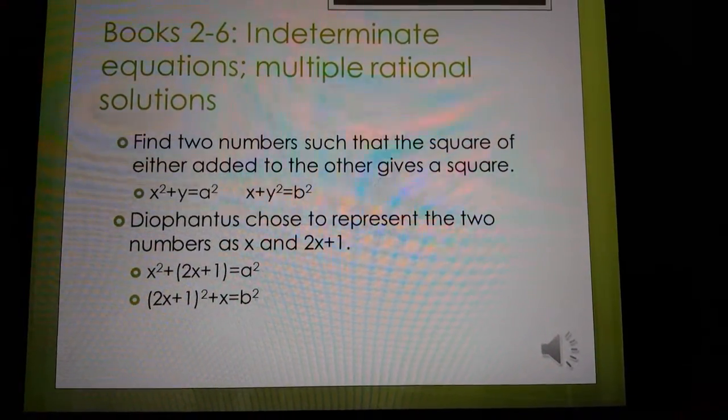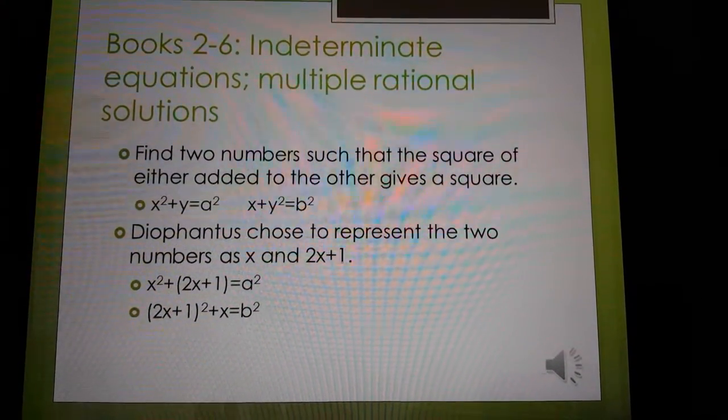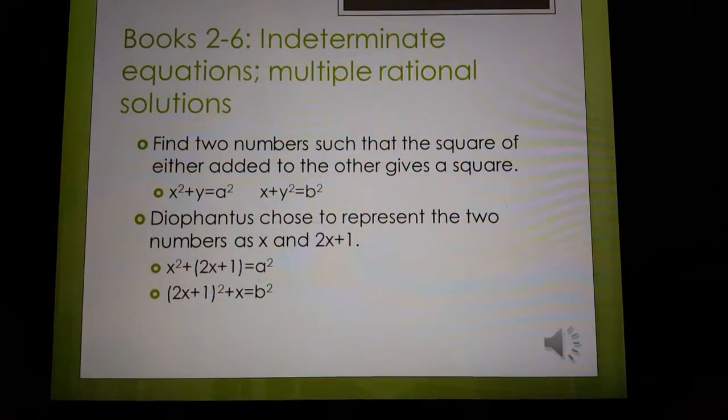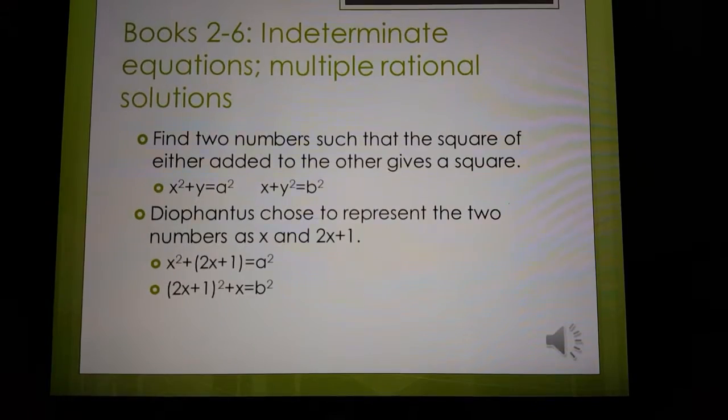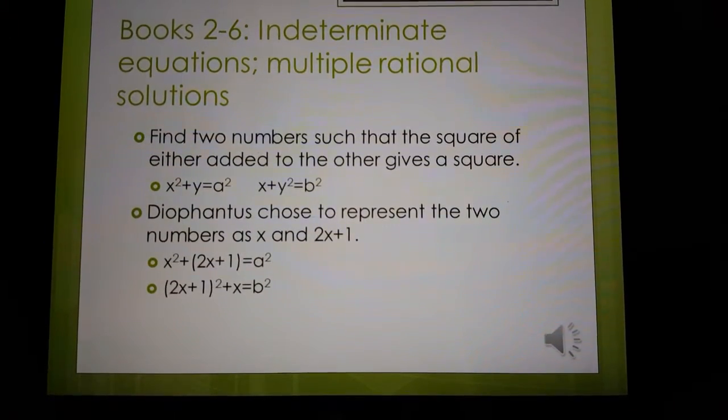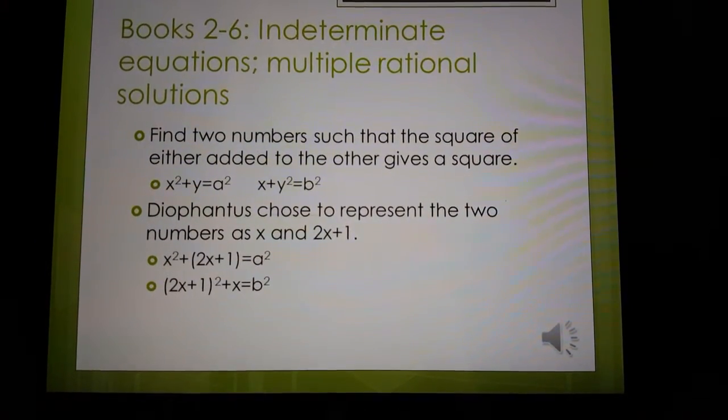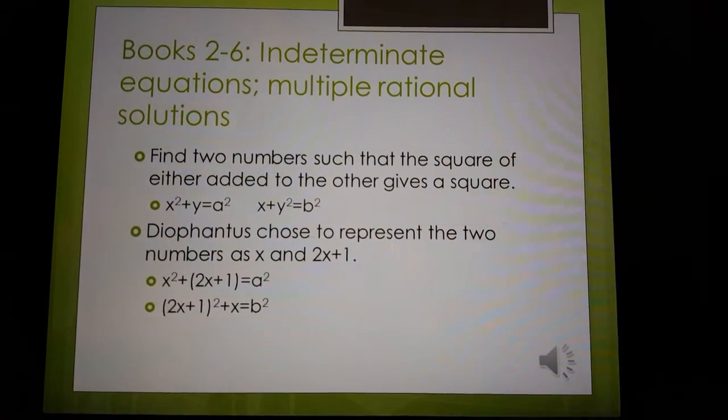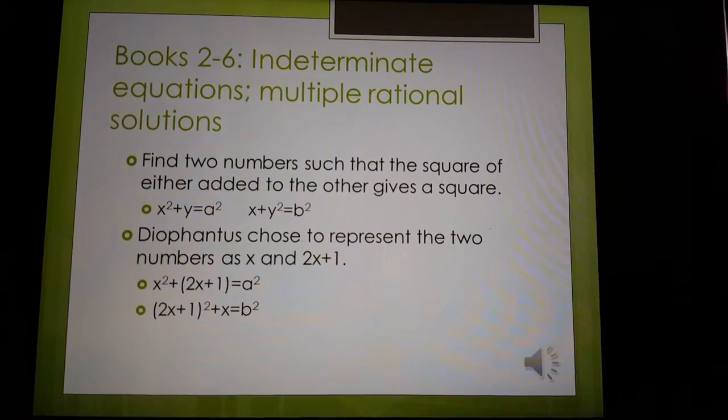Diophantus chose to represent the two numbers as x and 2x plus 1. So we have x squared plus 2x plus 1 equals a squared, and 2x plus 1 squared plus x equals b squared.